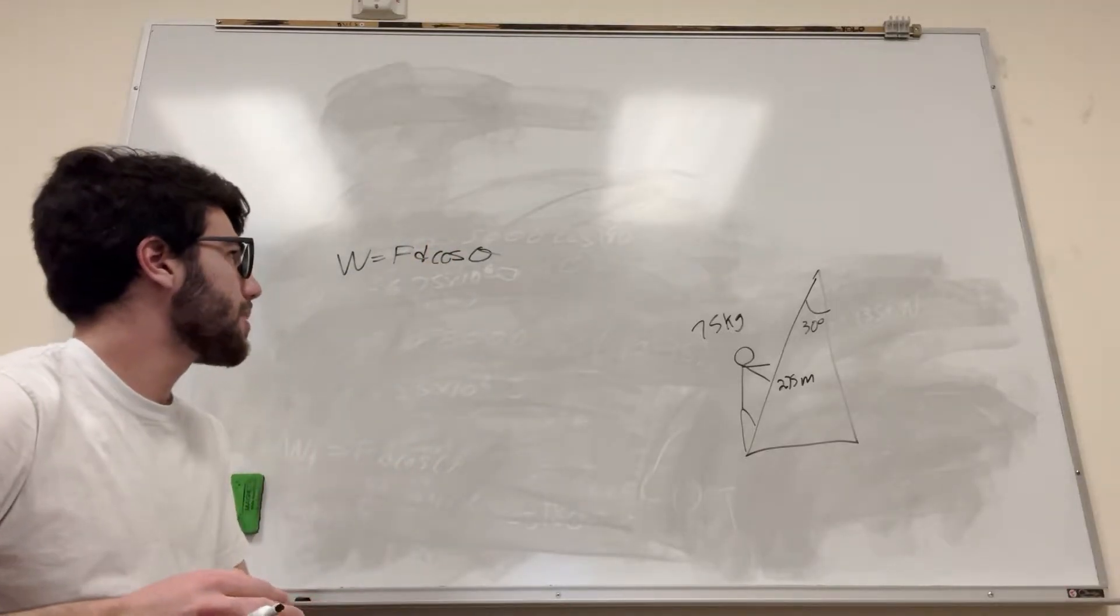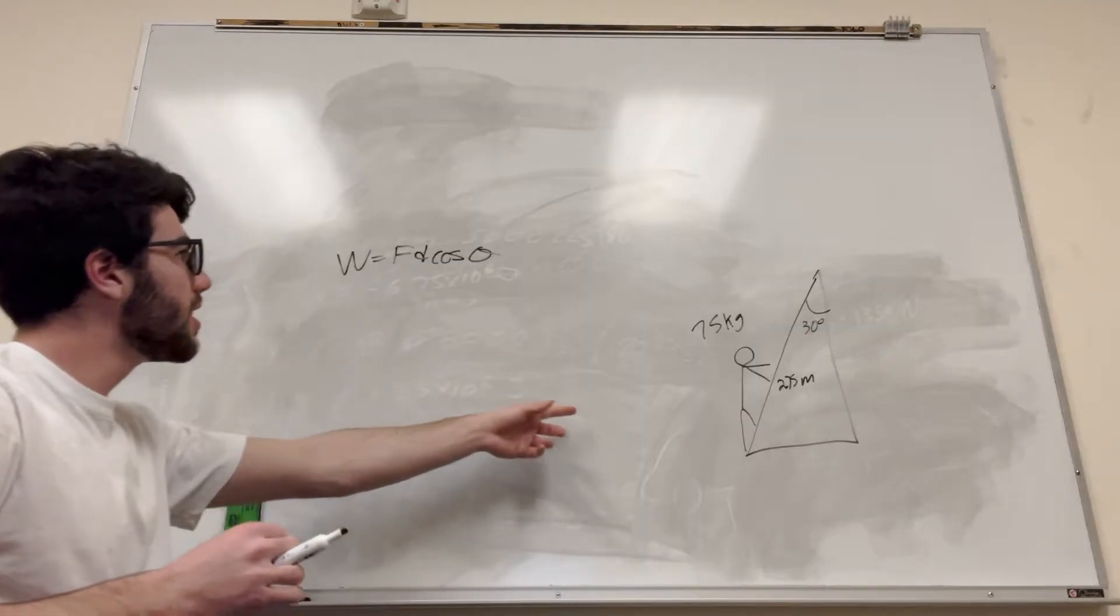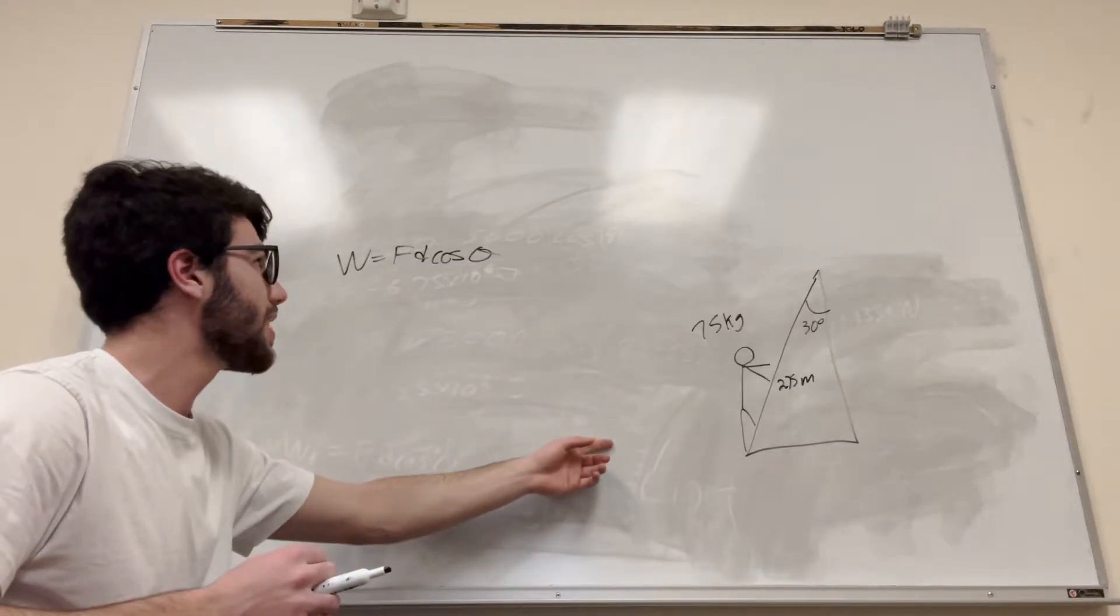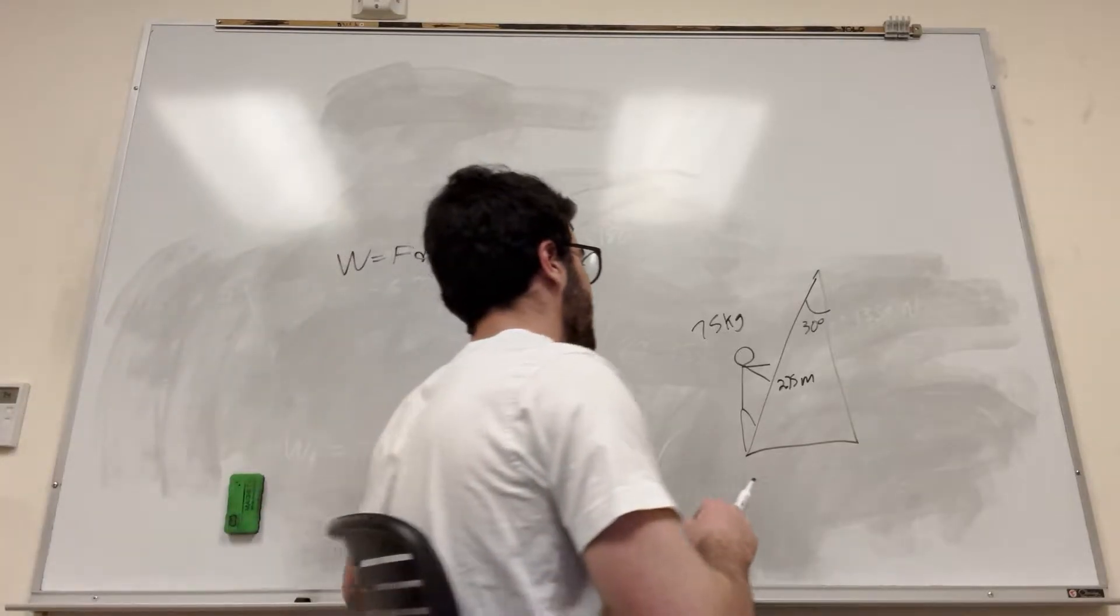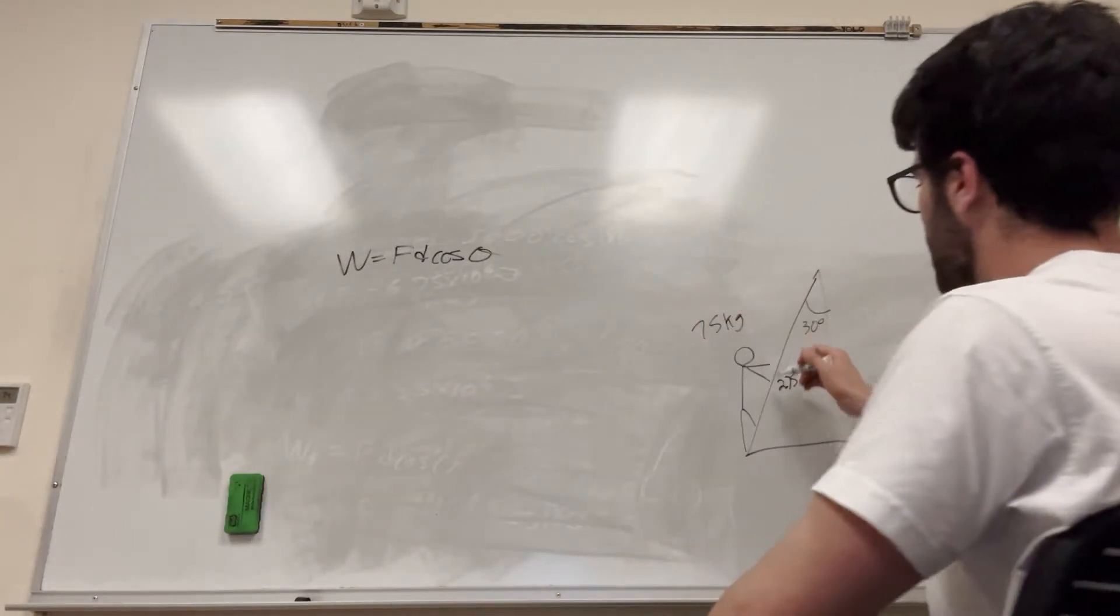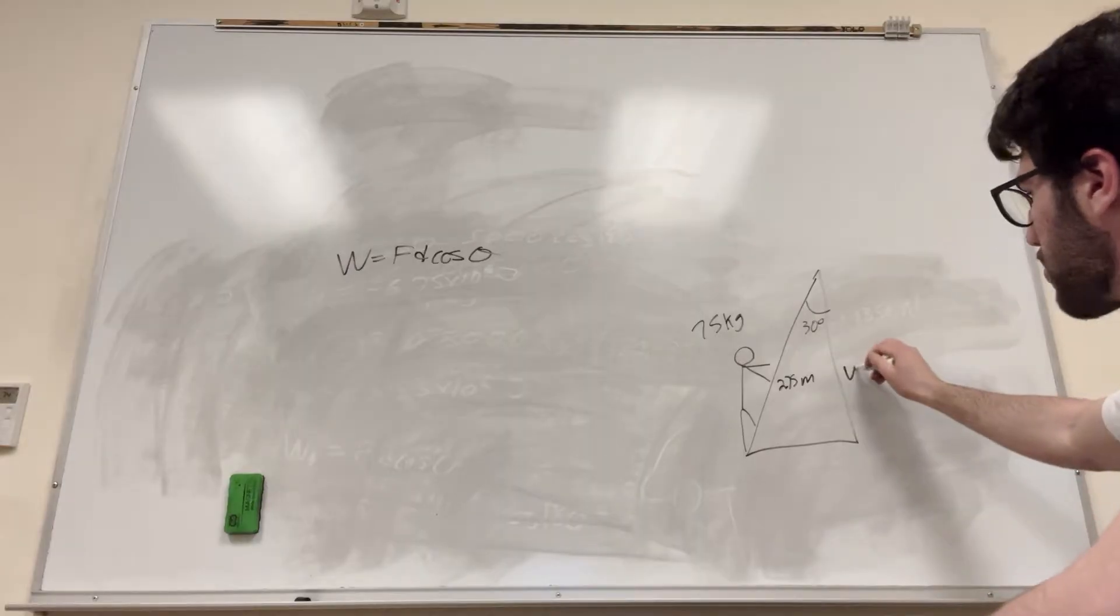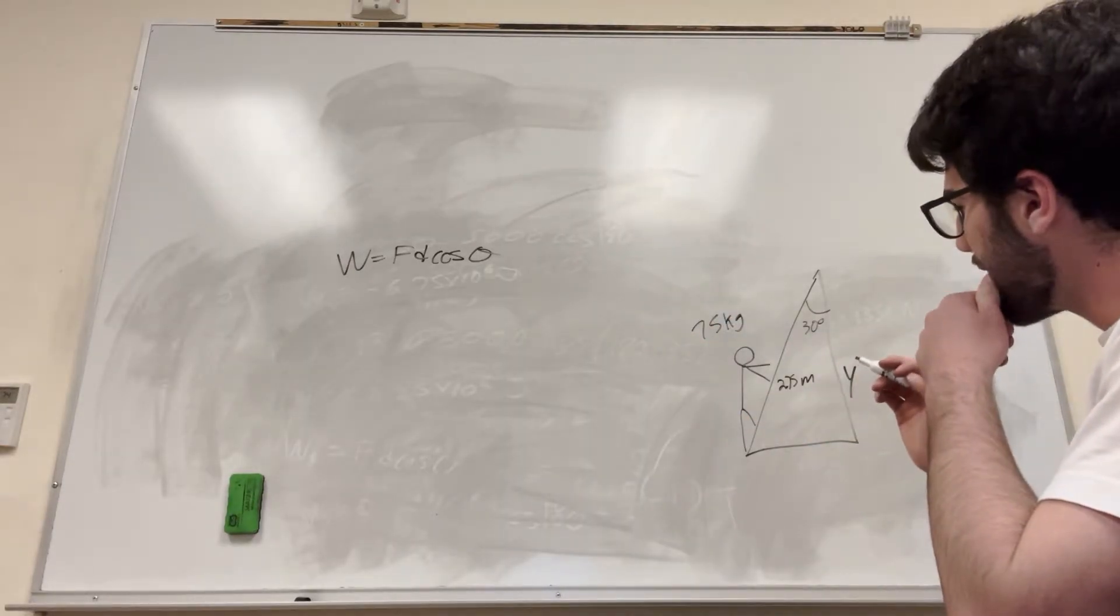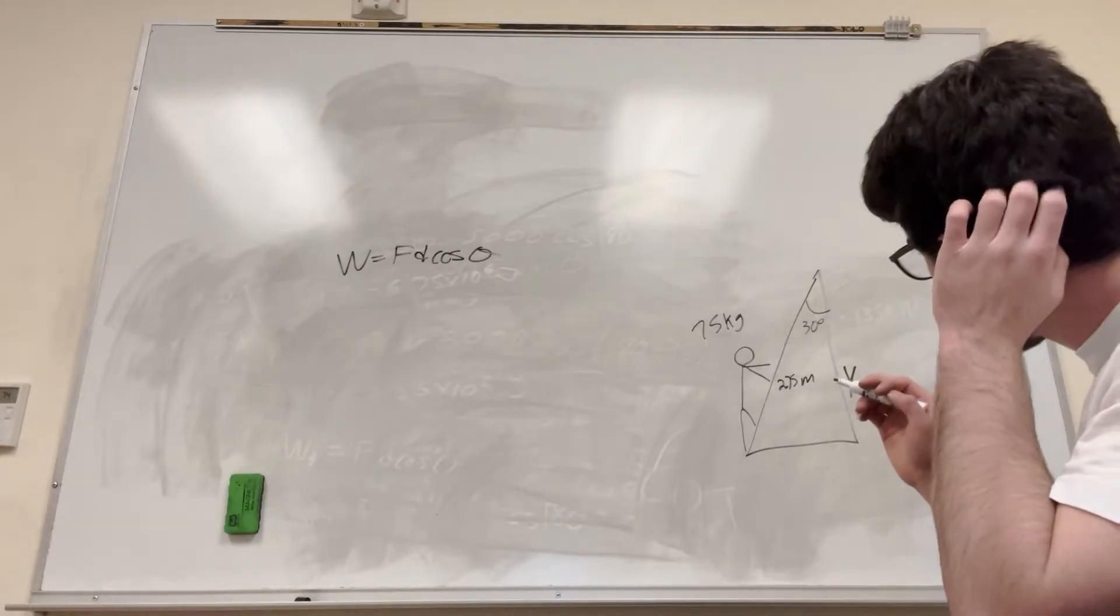Okay, so we know a couple things. We can find force because we know his weight. We can find the distance, because if we're looking at the distance spun by gravity, it's going to be this amount of vertical elevation he goes. So it's not going to be this 2.75, it's going to be this y value here. And cosine of theta, we can also figure that out.